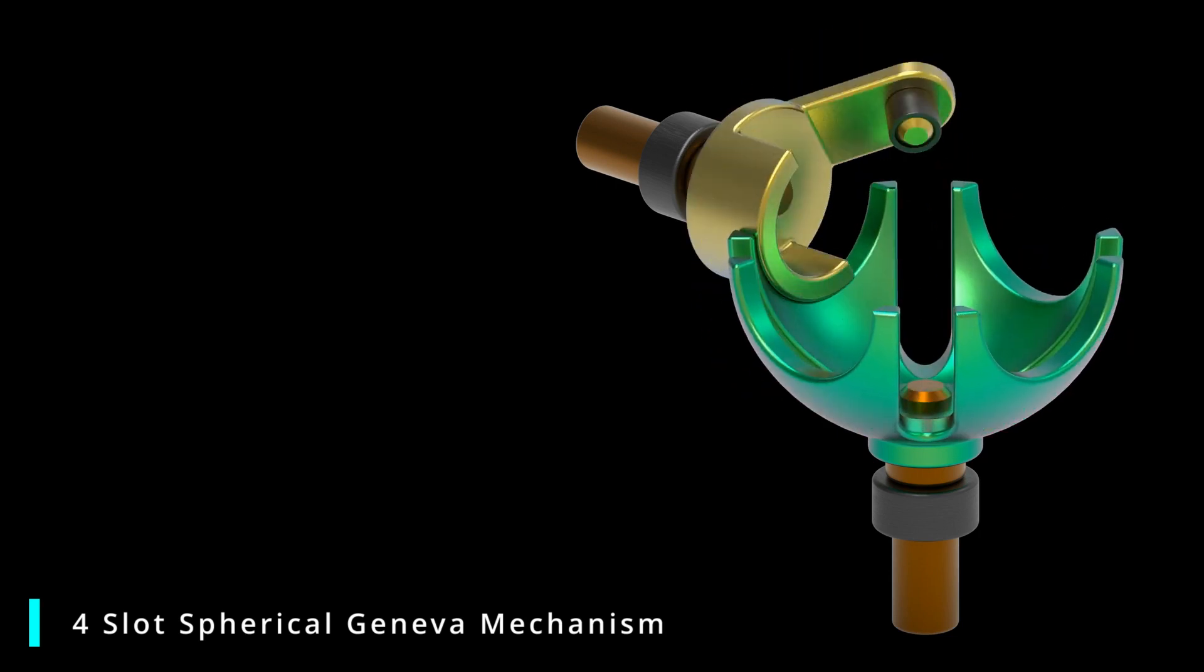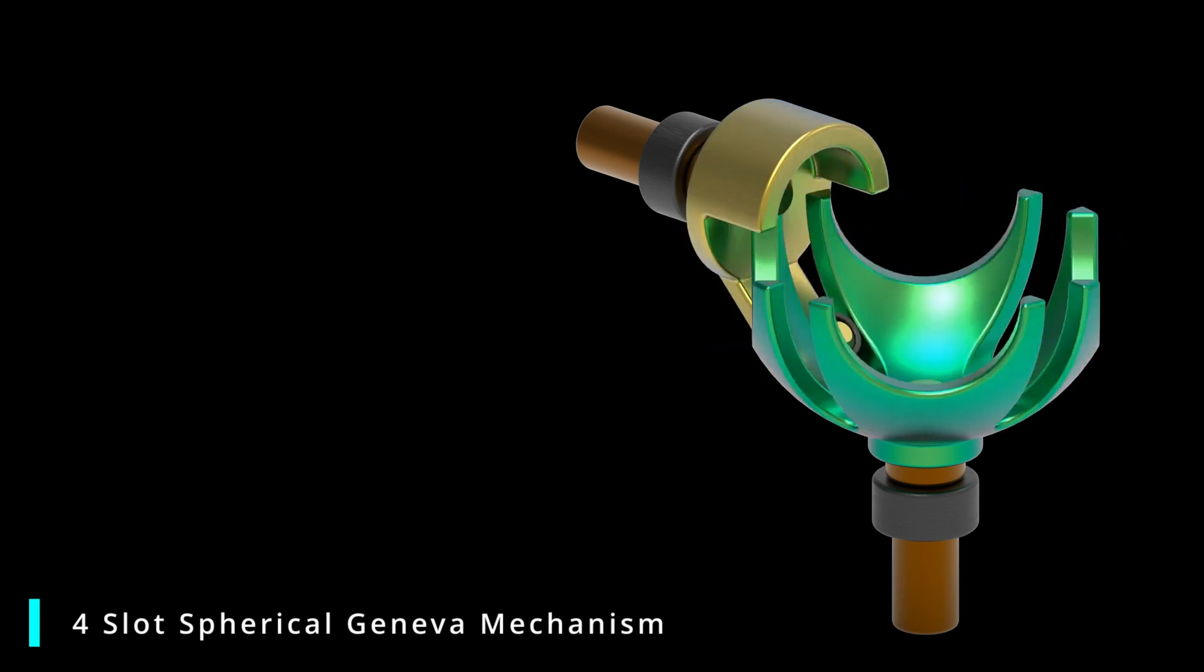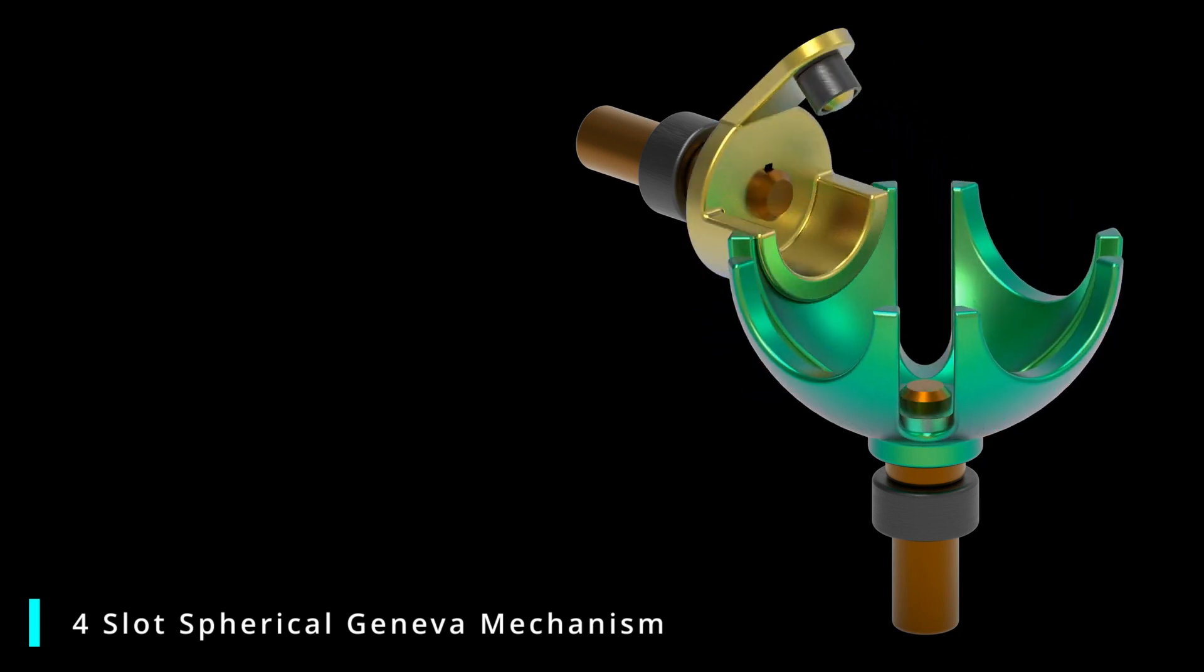Another modification to the Geneva mechanism is the use of a planetary gear system, which allows for the transmission of power.